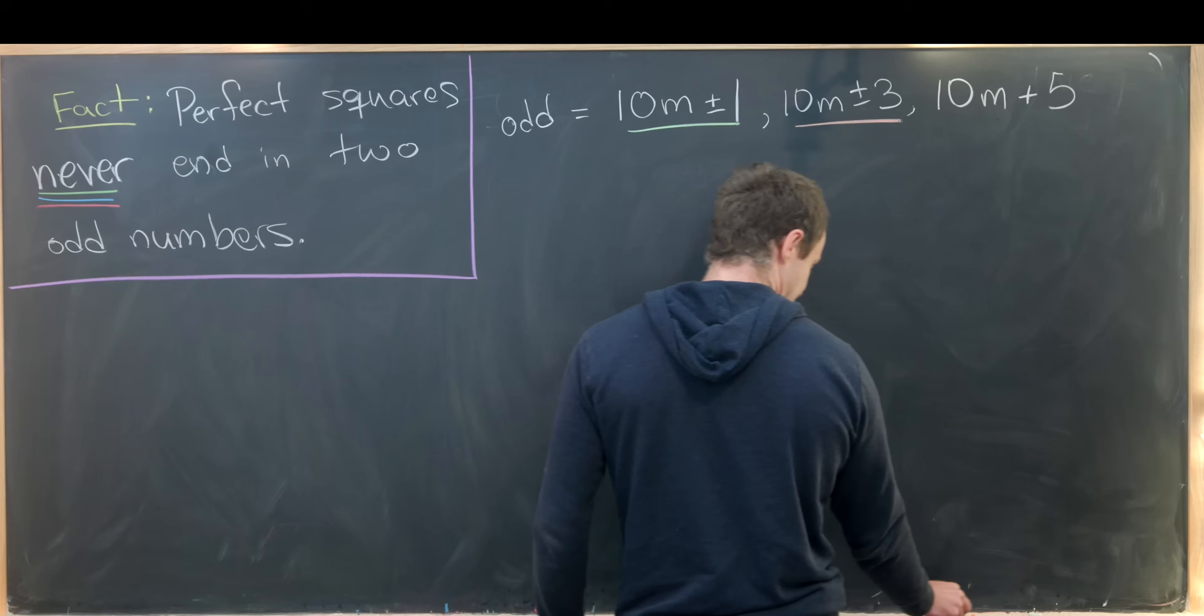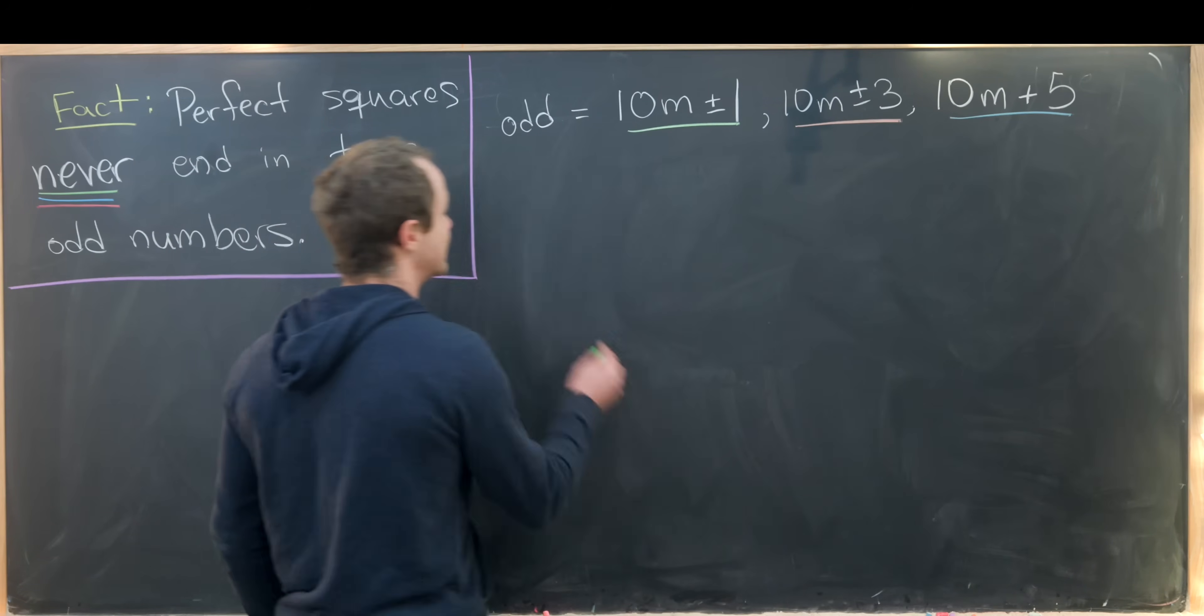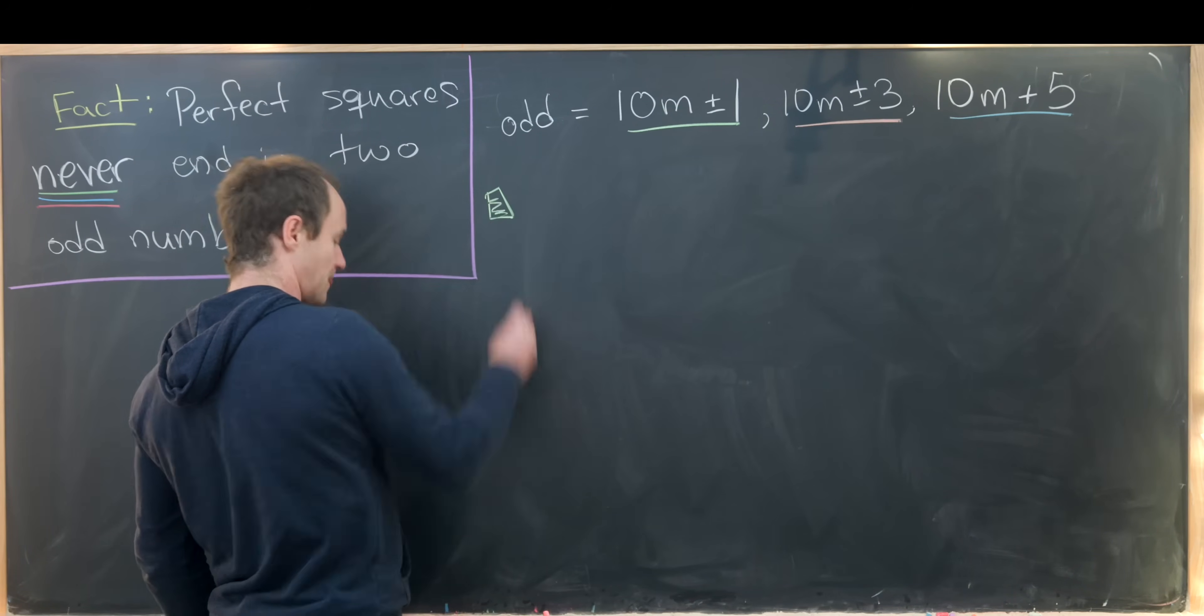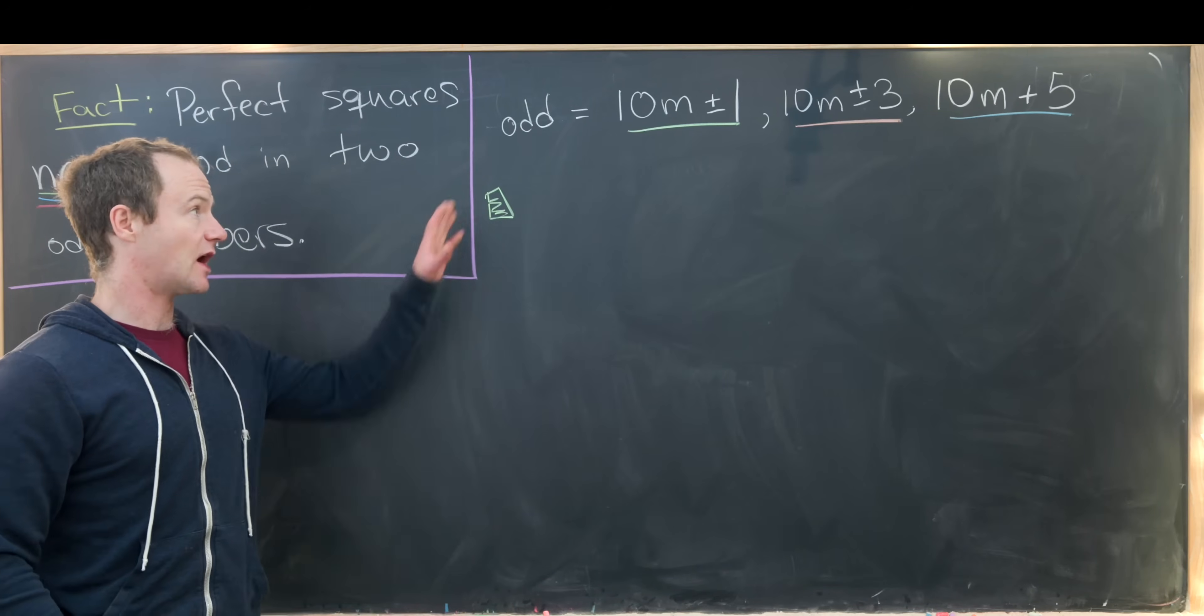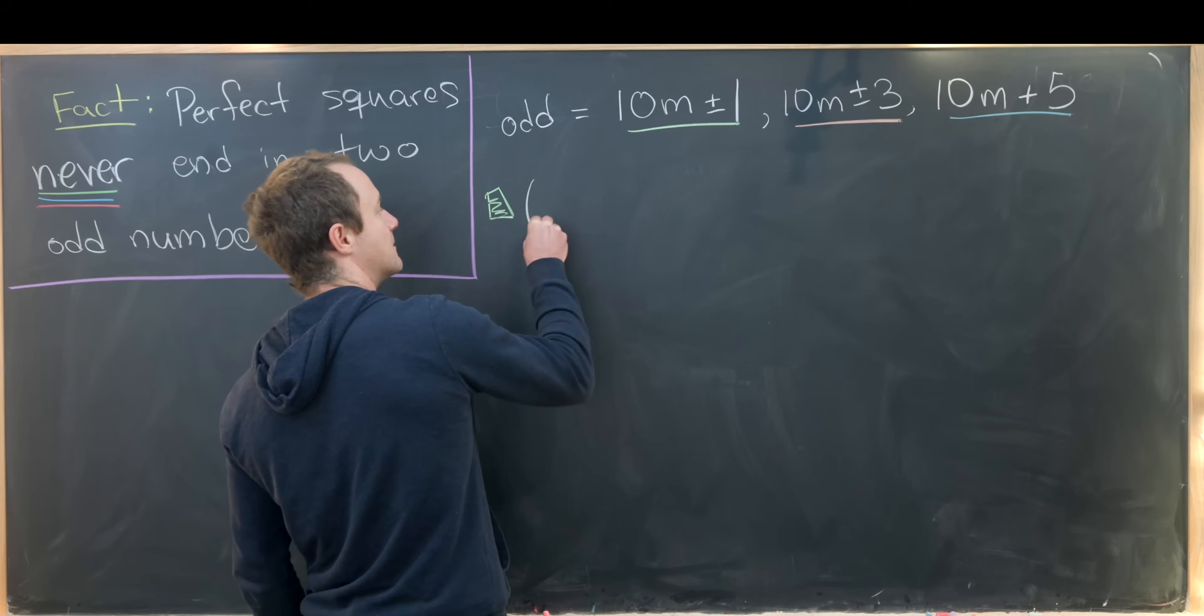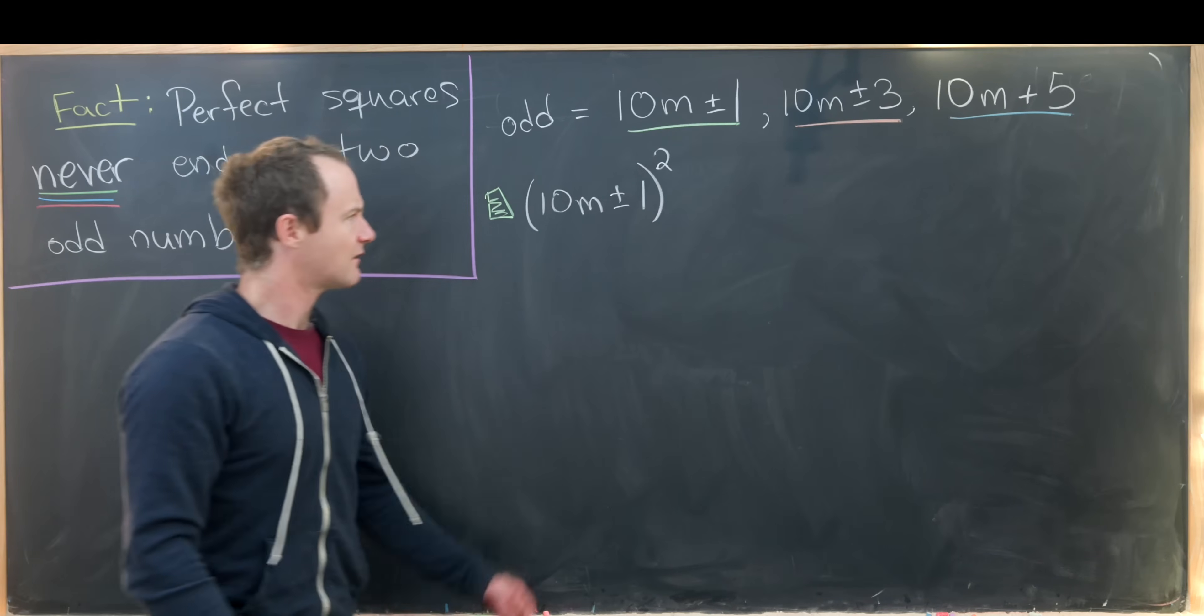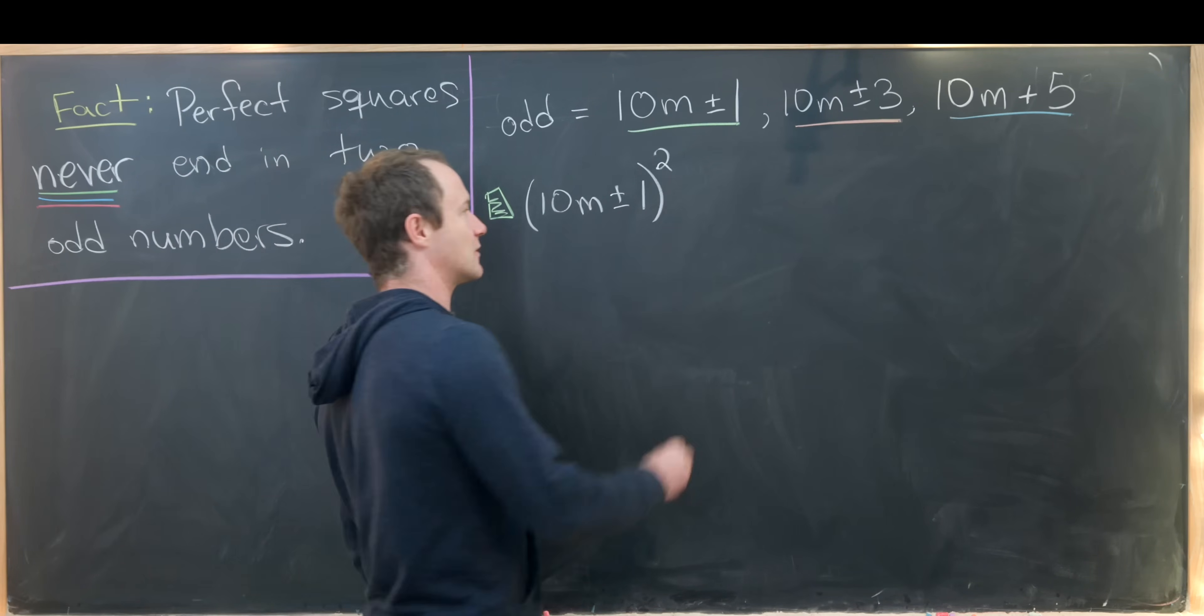So we're going to look at each case one at a time. So let's start with this green case, which is when we have an odd number, which is of the form 10m plus or minus one. So that means we've got 10m plus minus one squared. Let's see what we get when we square this out.